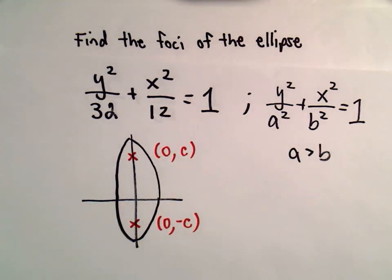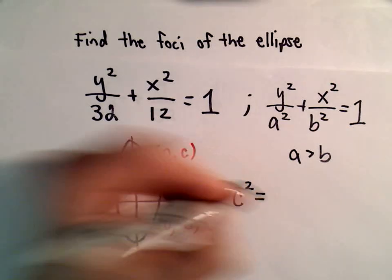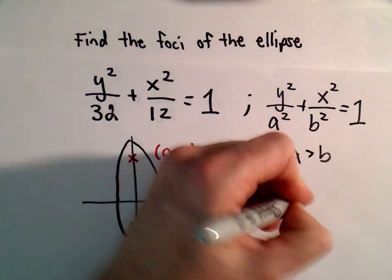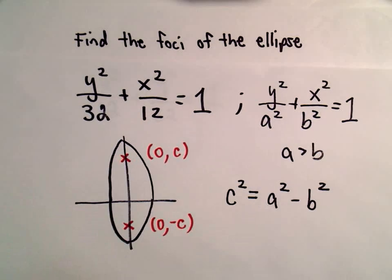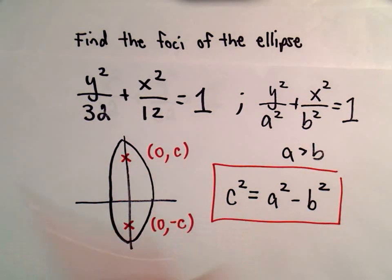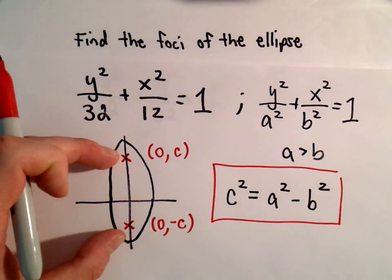The relationship that we use to solve says that c² = a² - b². This is the formula that we need. The foci are going to be sitting along the y-axis.